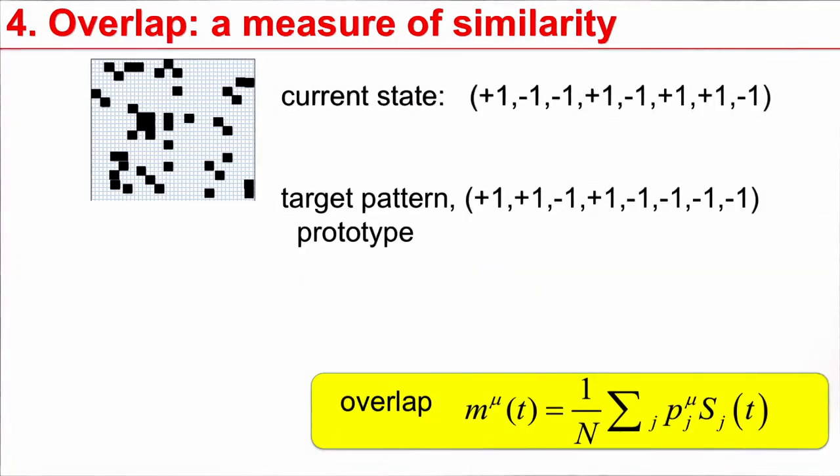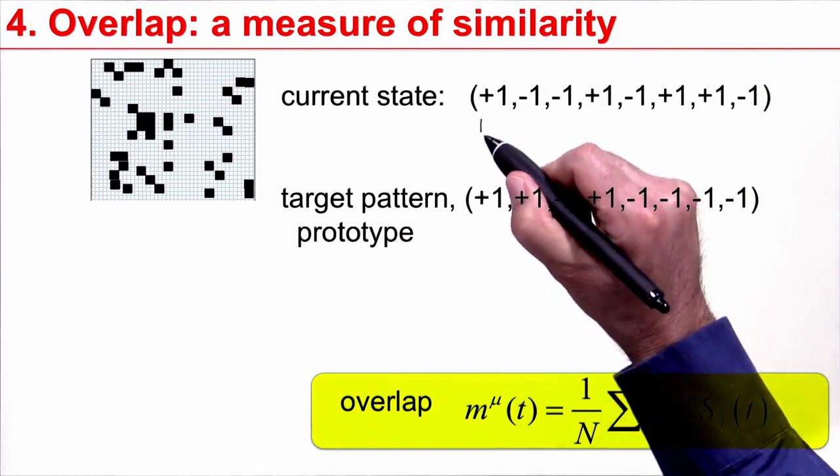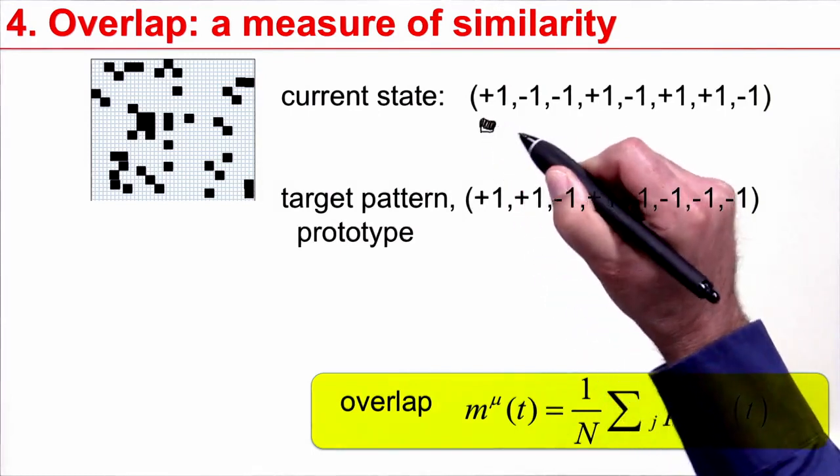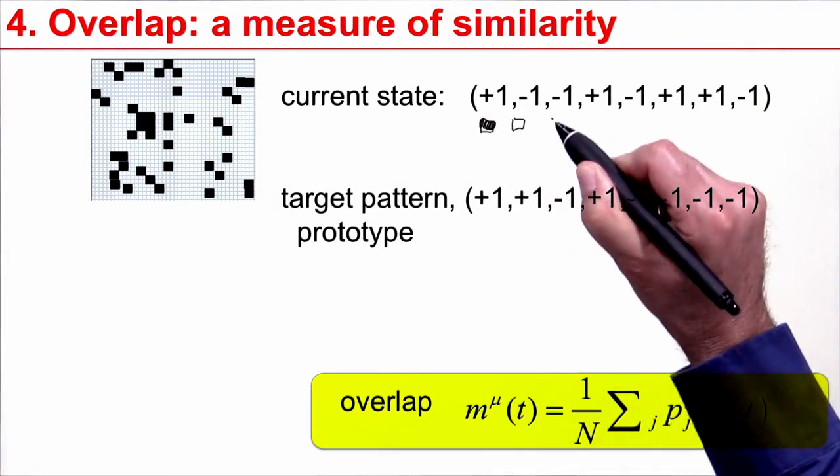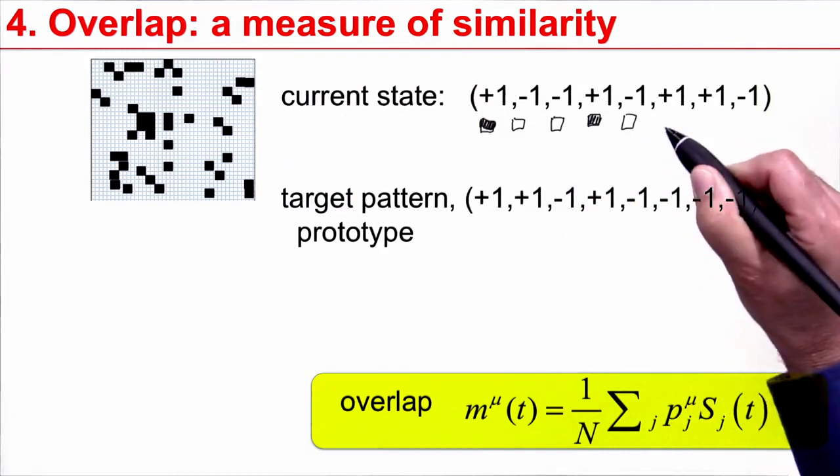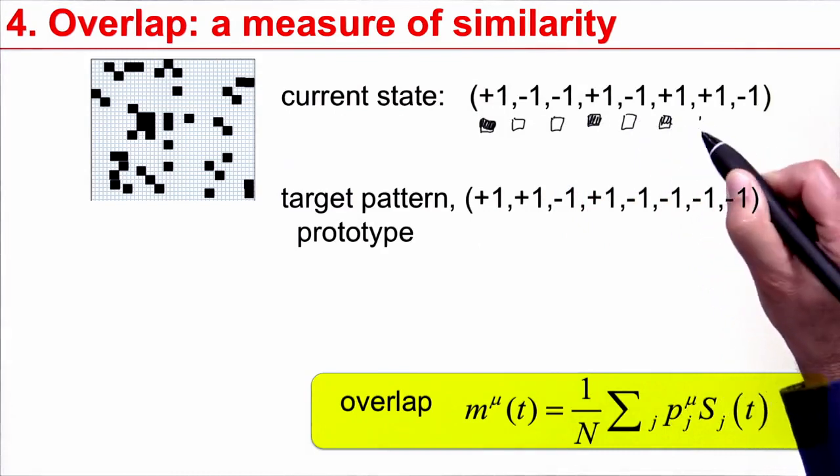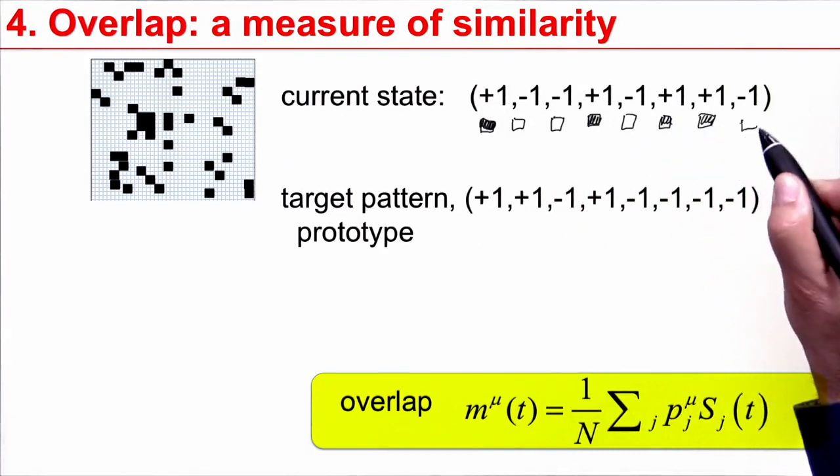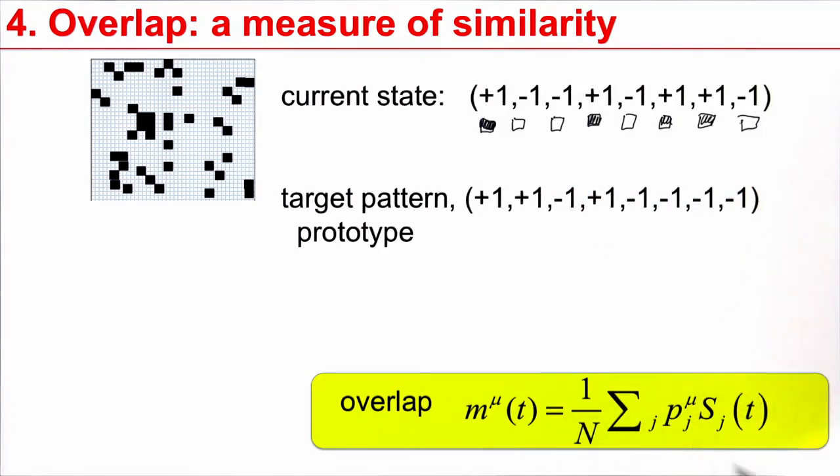I told you at the beginning of the lecture, when we talked about the algorithmic approaches, finding the closest prototype, that you need to compare the current state with the target patterns, with the prototype. Say the current state is a certain combination: a black pixel followed by a white pixel, followed by a white pixel, followed by a black pixel, white pixel, white pixel, black pixel, black pixel, white pixel. That's my current state.